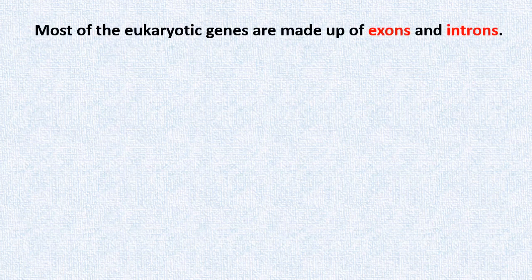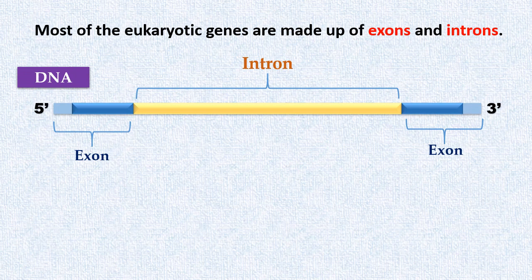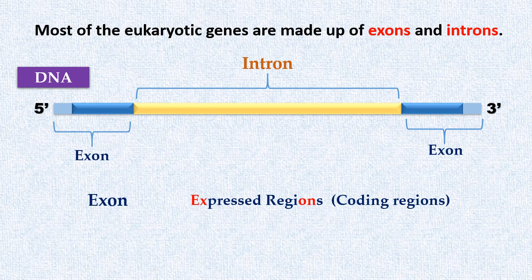Most of the eukaryotic genes are made up of exons and introns. Exon stands for expressed region. It is the coding region of eukaryotic gene. These coding regions are eventually translated as proteins.